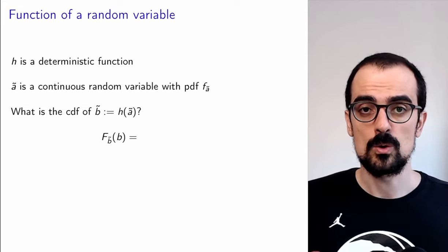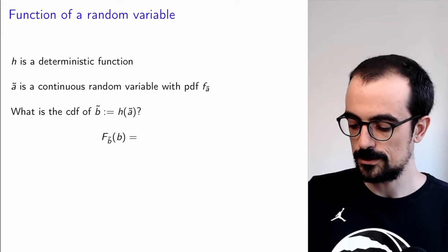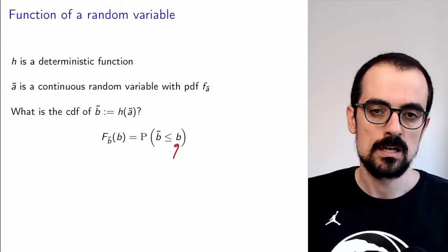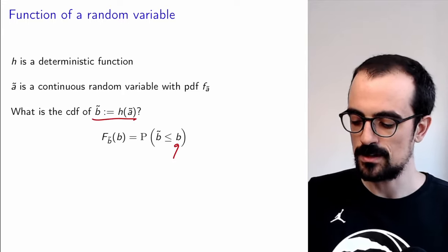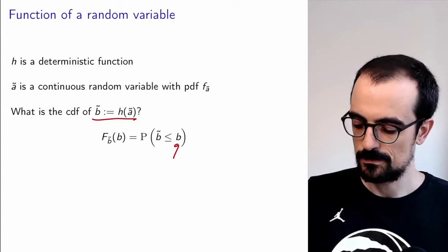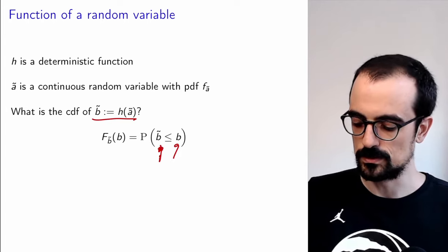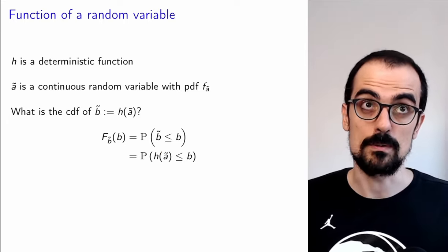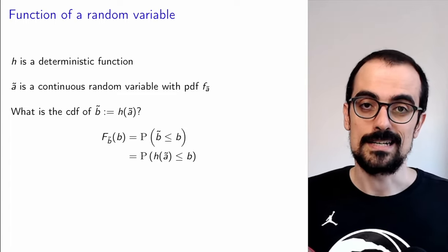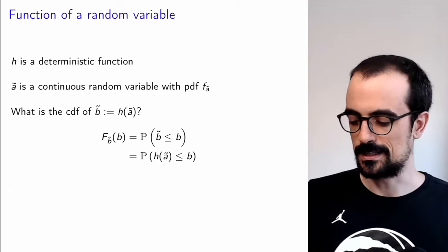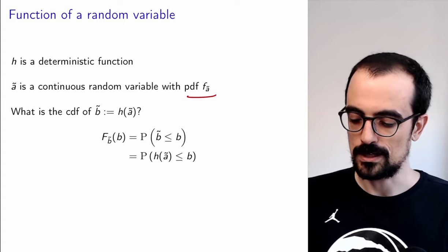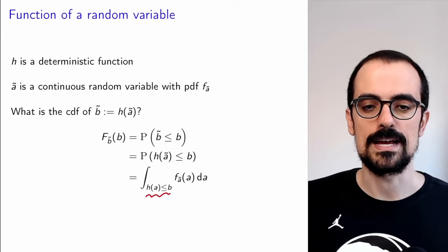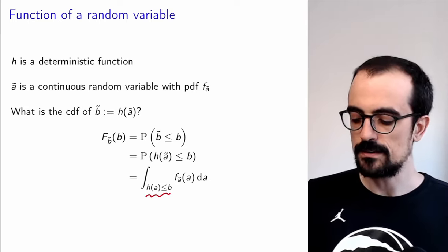What is the CDF of B at this value? It's the probability that the random variable is smaller or equal to that value. Now we can use the information that we have — we plug in h(A) because that's what this random variable equals. Now we have a probability of an event that depends on A, and we know how to compute this using the PDF of A. We integrate over all the values for which h(A) is smaller or equal to B. That's how we derive the CDF of B.